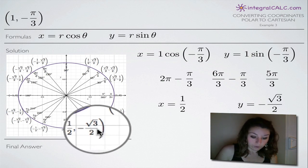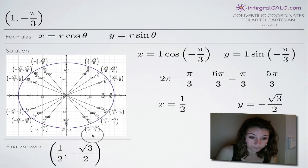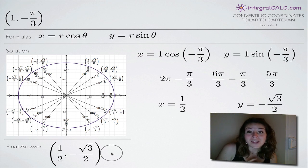So that's our x and y-coordinates. And when we put them together, we get the Cartesian coordinate 1 half comma negative square root of 3 over 2. And that's how we convert from the polar point 1 comma negative pi over 3 to a Cartesian point. So I hope that helped you guys. And I'll see you in the next video. Bye!